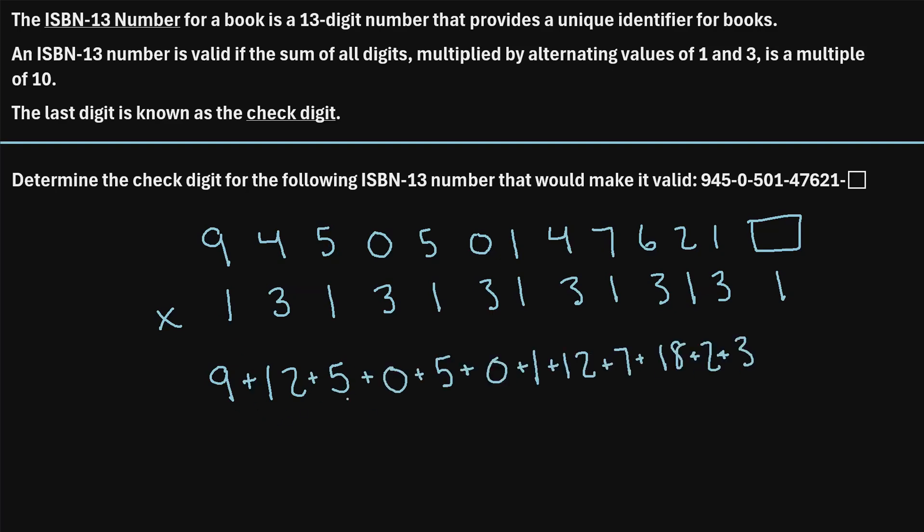Okay, so after we perform all of that multiplication, then we add all of these digits. So when we add up these digits right here, here's what we get. The sum of these digits turns out to be 74.